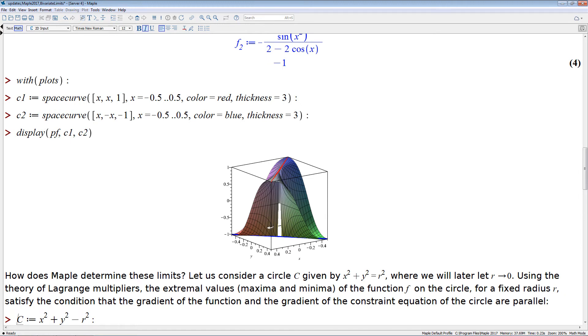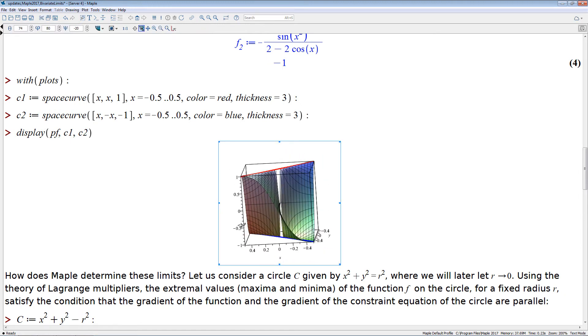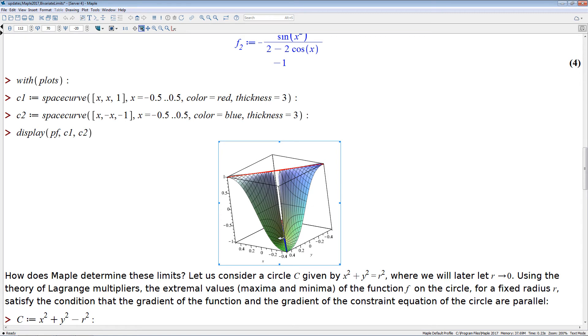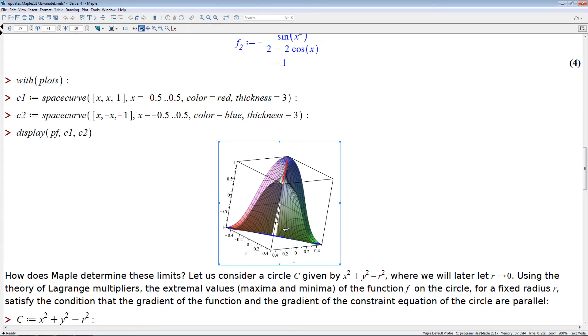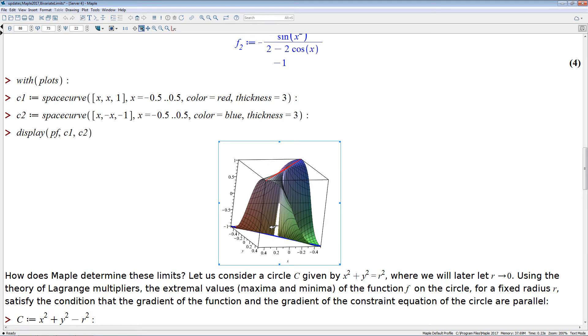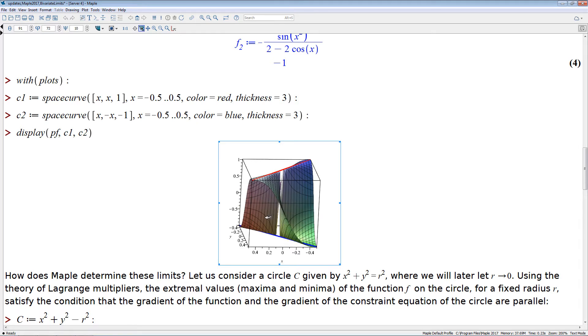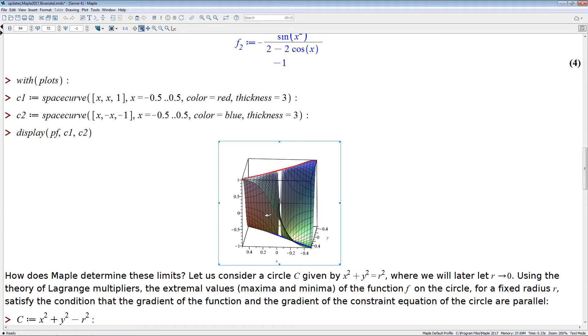And what we see now is in the first example, we actually plot those two diagonals. So the blue one is the diagonal given by the equation y equals minus x and the red one is a diagonal given by the equation y equals x. And if you take the limit along one of those diagonals, then you can see the value of the function on those diagonals actually happens to be constant and it's always one or minus one respectively.